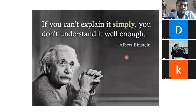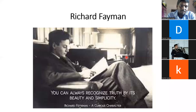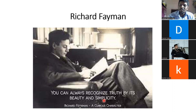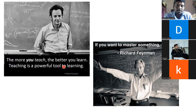Einstein said: 'If you can't explain it simply, you don't understand it well enough.' If you really understand something, you can explain it simply. Richard Feynman also said: 'You can always recognize truth by its beauty and simplicity.' If you understand the basics and foundations of any subject, you can really understand its complexity. Try to narrow the topic down to its simplicity.